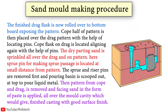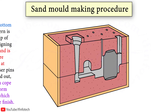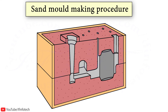The pattern from cope and drag is removed and facing sand in the form of paste is applied all over the mould cavity and runners, which gives a finished casting with good surface finish. The mould is now assembled and ready for pouring.